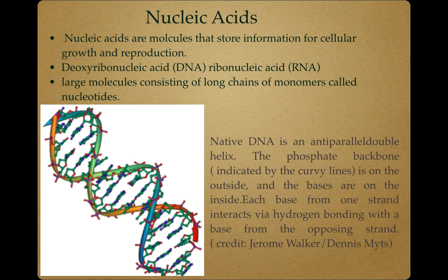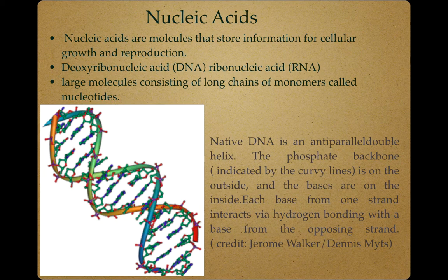The two main classes of nucleic acids are the DNA and the RNA. DNA is the chemical basis of heredity and is considered to be the reserve bank of genetic information. It is also responsible for maintaining the identity of different species of organisms over millions of years. Cellular function is under the control of DNA, which is the basic information pathway. DNA directs the synthesis of RNA, which in turn directs protein synthesis.